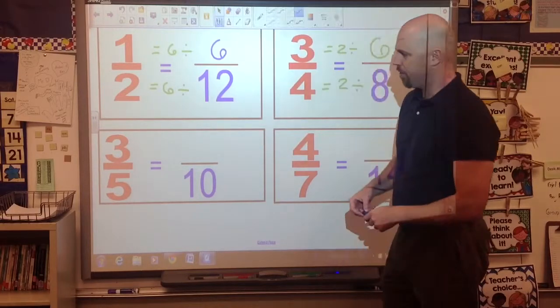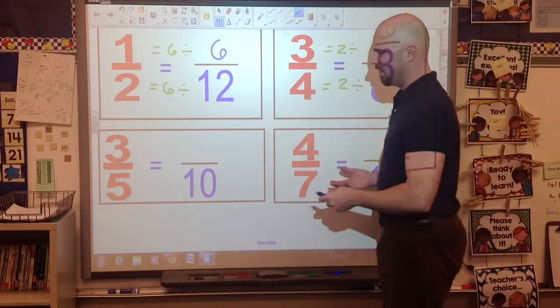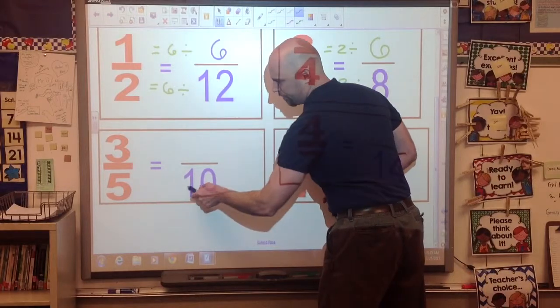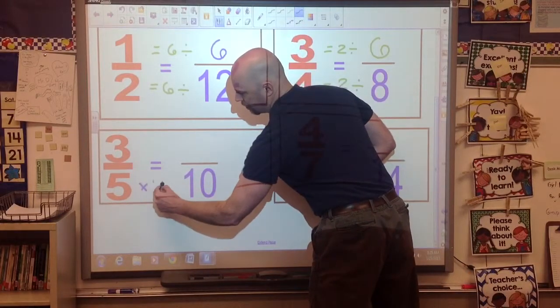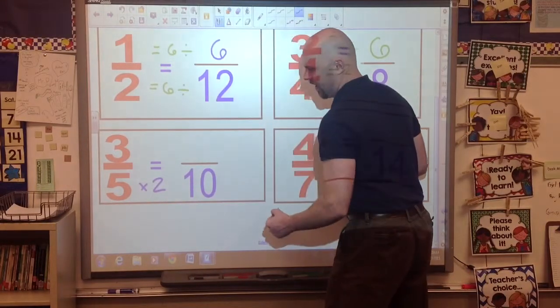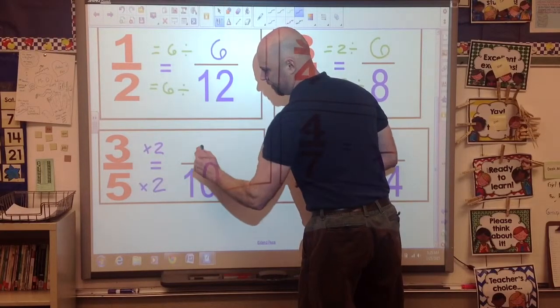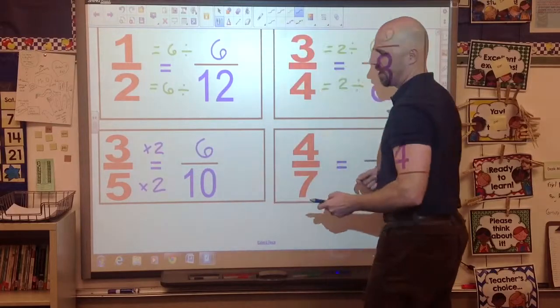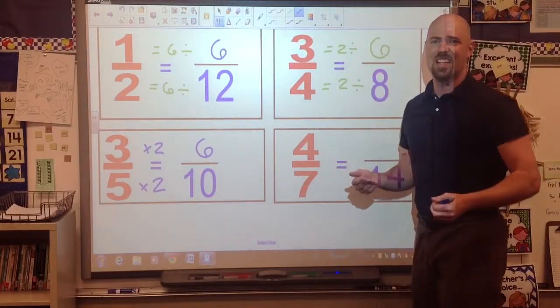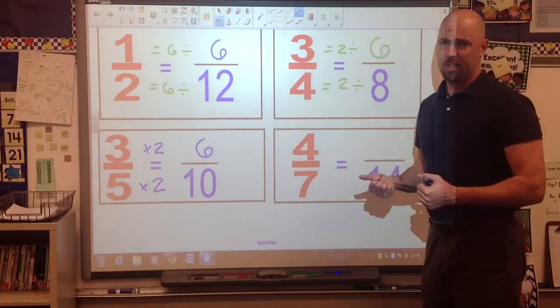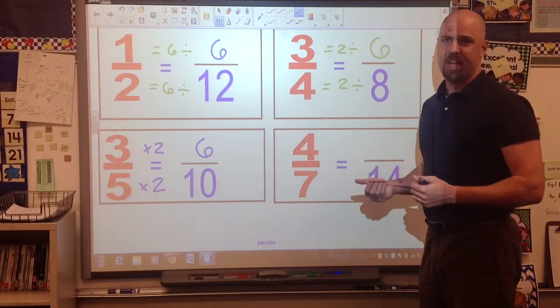Let's take a look at the next set. So down here we have three-fifths equals how many tenths? All right, let's look here. Five times two is going to give me ten, and whatever I do to the bottom, I have to do to the top. Three times two gives me a six. Three-fifths and six-tenths are equivalent fractions. They're equal. They're worth the same amount.